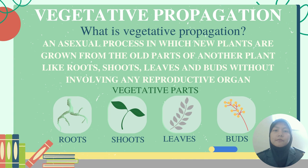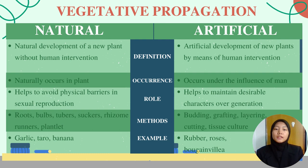Vegetative propagation is an asexual process in which new plants are grown from old parts of another plant, like roots, shoots, leaves, and buds, without involving any reproductive organ. There are two types: natural and artificial. Natural propagation is a natural development of a new plant without human intervention, while artificial involves human intervention. Natural occurs in plants naturally and helps avoid physical barriers in sexual reproduction, while artificial helps maintain desirable characters over generations.